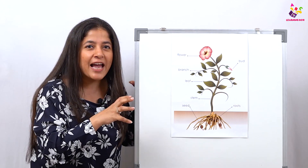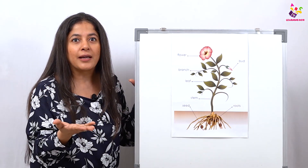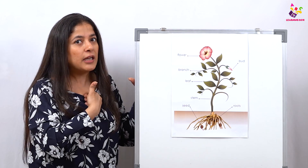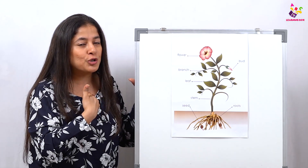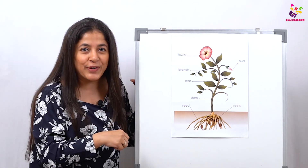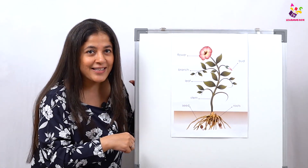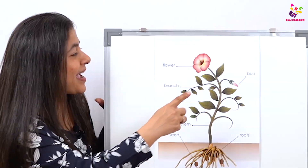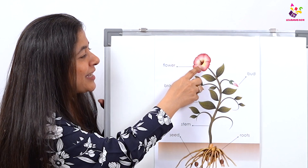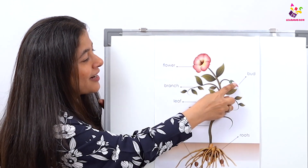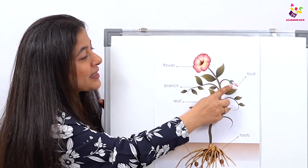And do you know why else the leaves are so important? Because the leaves change carbon dioxide, which is the dirty gas, into oxygen — and then we need that oxygen to breathe!